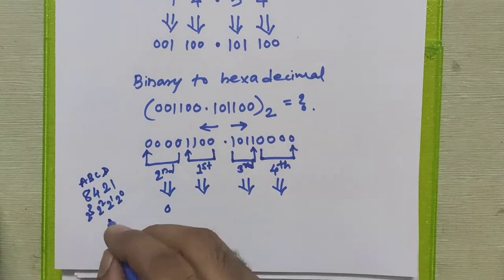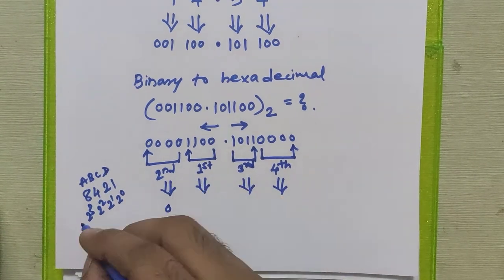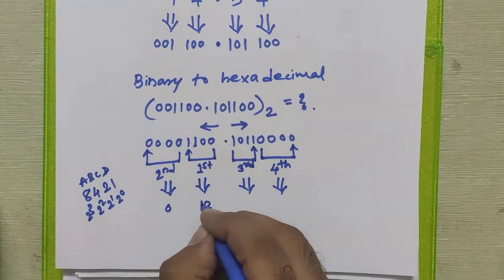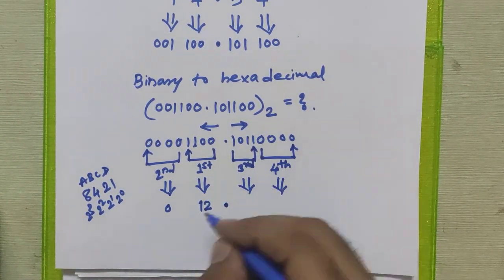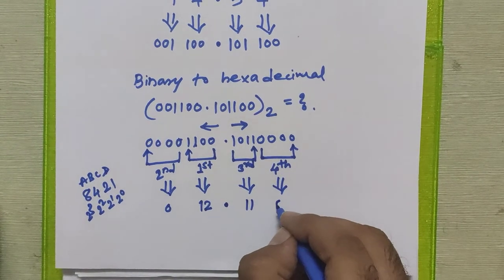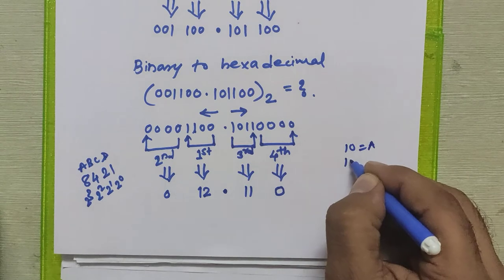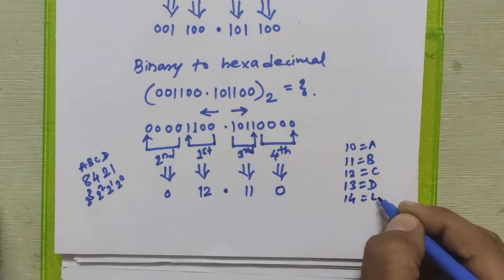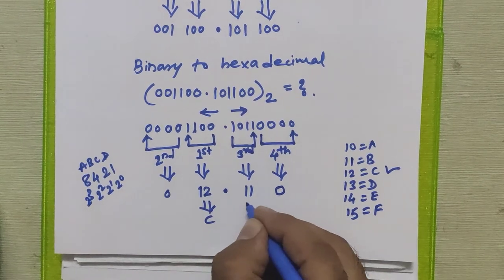Say there are 4 bits a, b, c, d. We use the 8-4-2-1 system in hexadecimal. If you put 0000 you get 0. For the second group: 8 plus 4 is 12, so the hexadecimal equivalent is 12. For the third group: 8 plus 2 plus 1 is 11. For the fourth group all are zeros so hexadecimal equivalent is 0. In hexadecimal we represent 10 as A, 11 as B, 12 as C, 13 as D, 14 as E, 15 as F. So 12 is C and 11 is B.